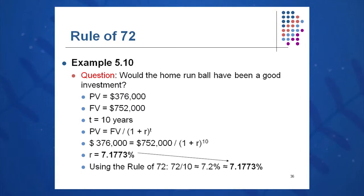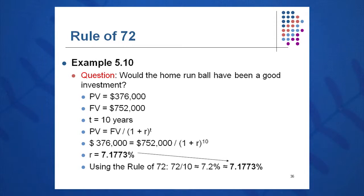You can also do it technically by filling in the variables: present value of $376,000, future value of $752,000, time of 10 years. Plug in the variables and solve for r, and you get 7.1773% — very very close to our 7.2%.